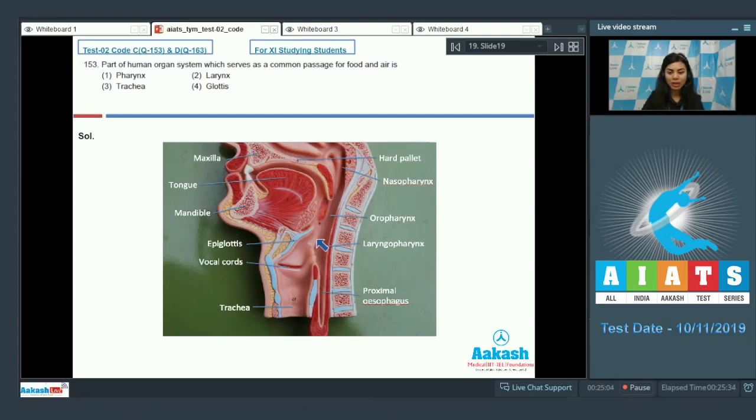Now, food is prevented from entering the trachea by the epiglottis flap here, and it goes into the esophagus. So this is the common passage called pharynx. Pharynx also connects the nasal and oral cavities with the larynx and esophagus. The right answer here would be pharynx.